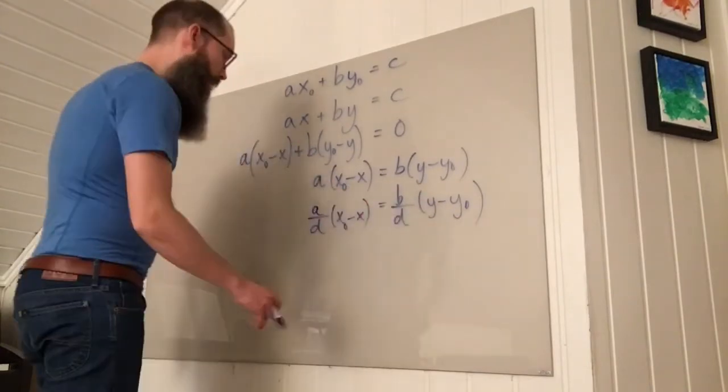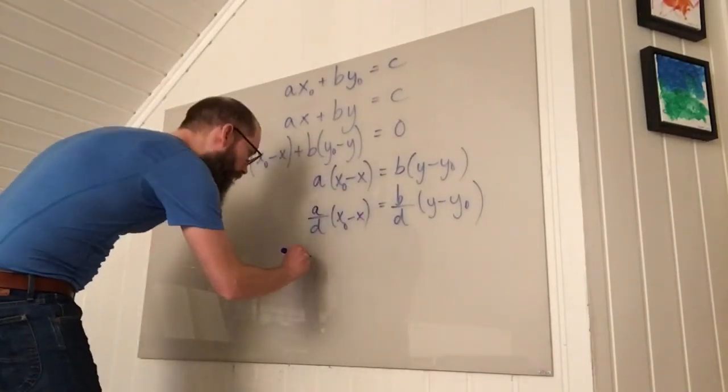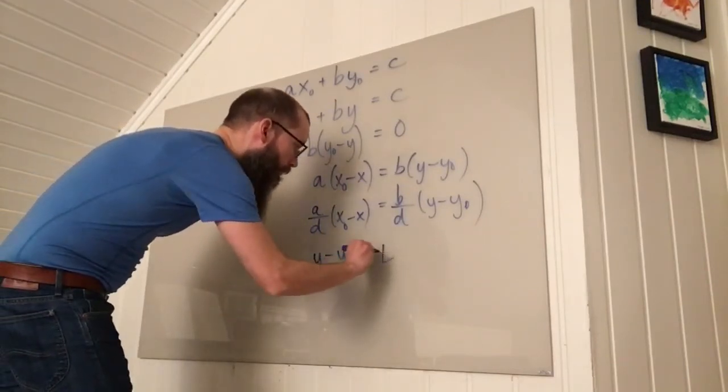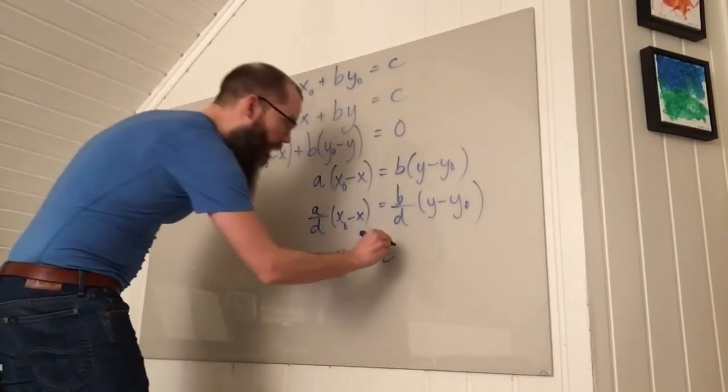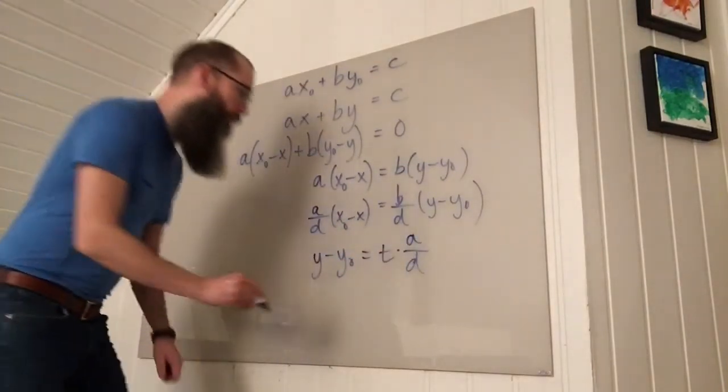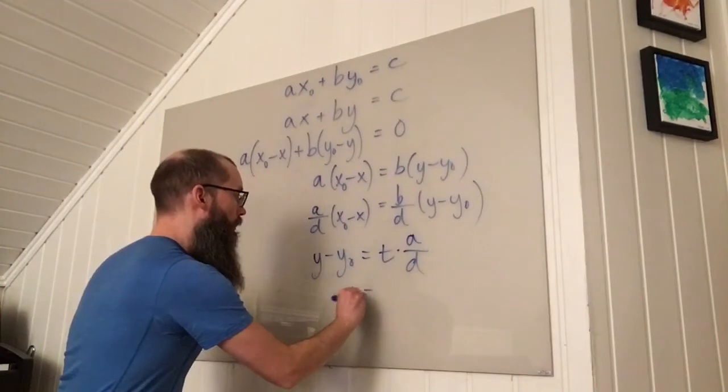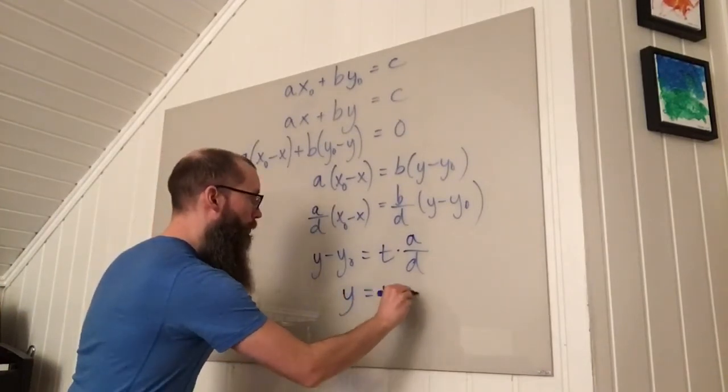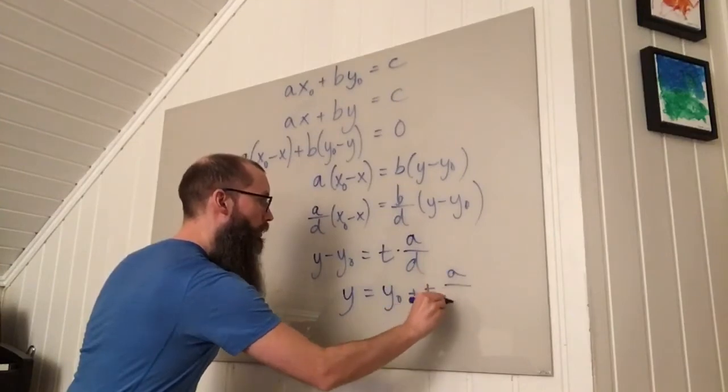So I can conclude that Y minus Y0 is some integer T times A divided by D. So that means that Y is of the form Y0 plus T times A divided by D.